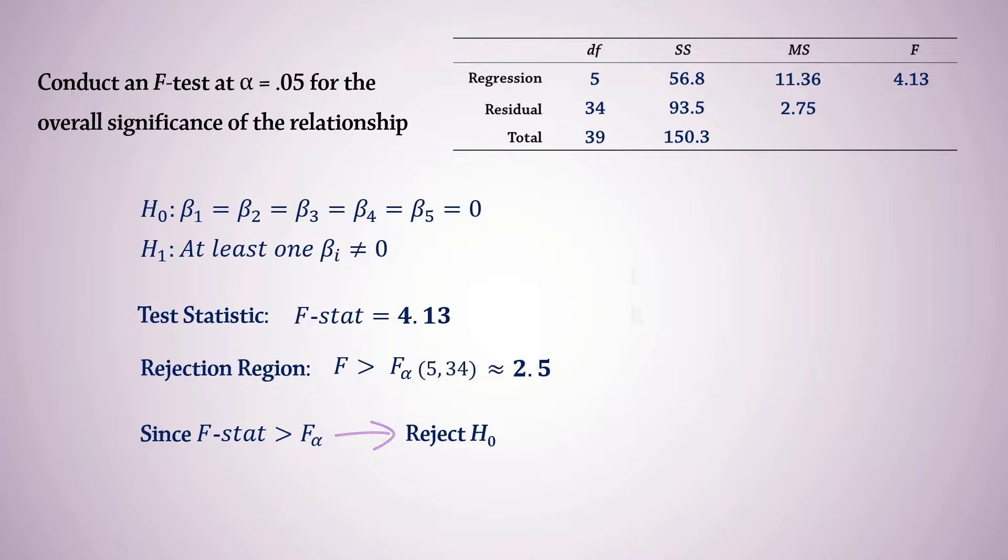Alternatively, by using software, we can also obtain the p-value to be 0.0049. Since this p-value is less than our alpha of 0.05, we will again reject the null hypothesis using the p-value approach.